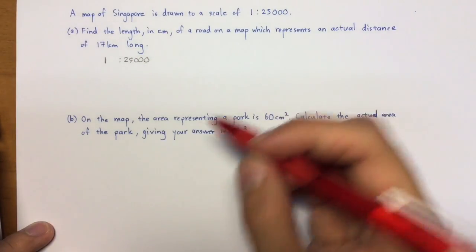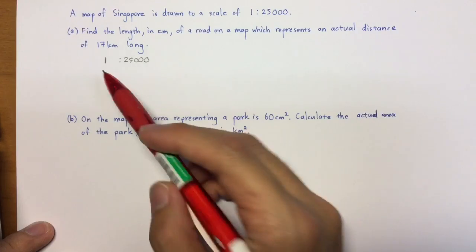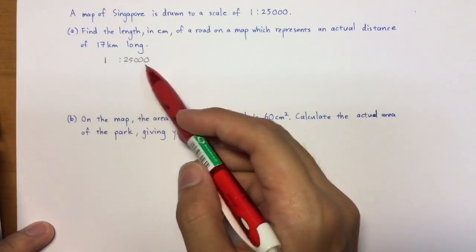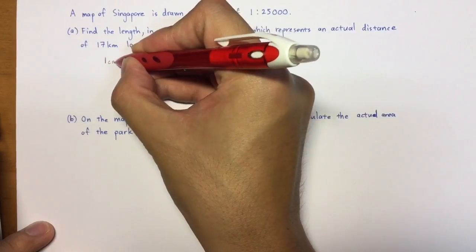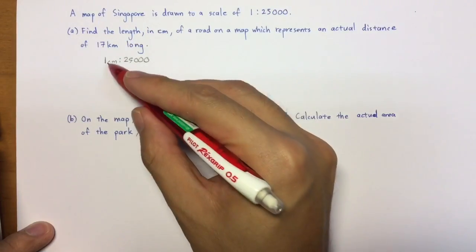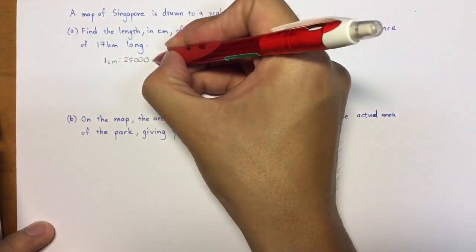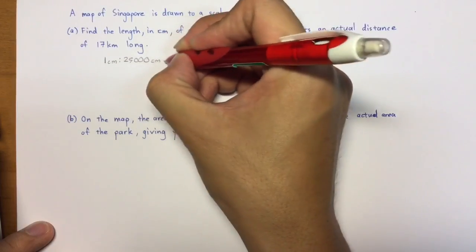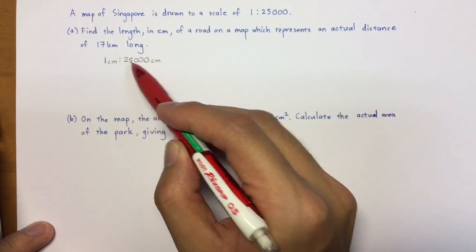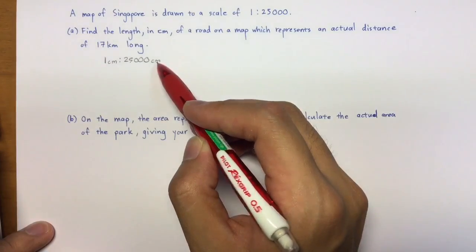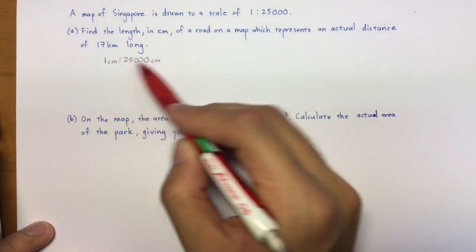So, a lot of students have asked me, what exactly is the unit for this? You realize it's unitless simply because you can actually place whatever units you want. So if I put 1 cm here, it actually represents 25,000 cm here. Instead, if I put 1 meter here, it would have been 25,000 meters. Okay, but for the purpose of this question, we'll use cm and cm here.